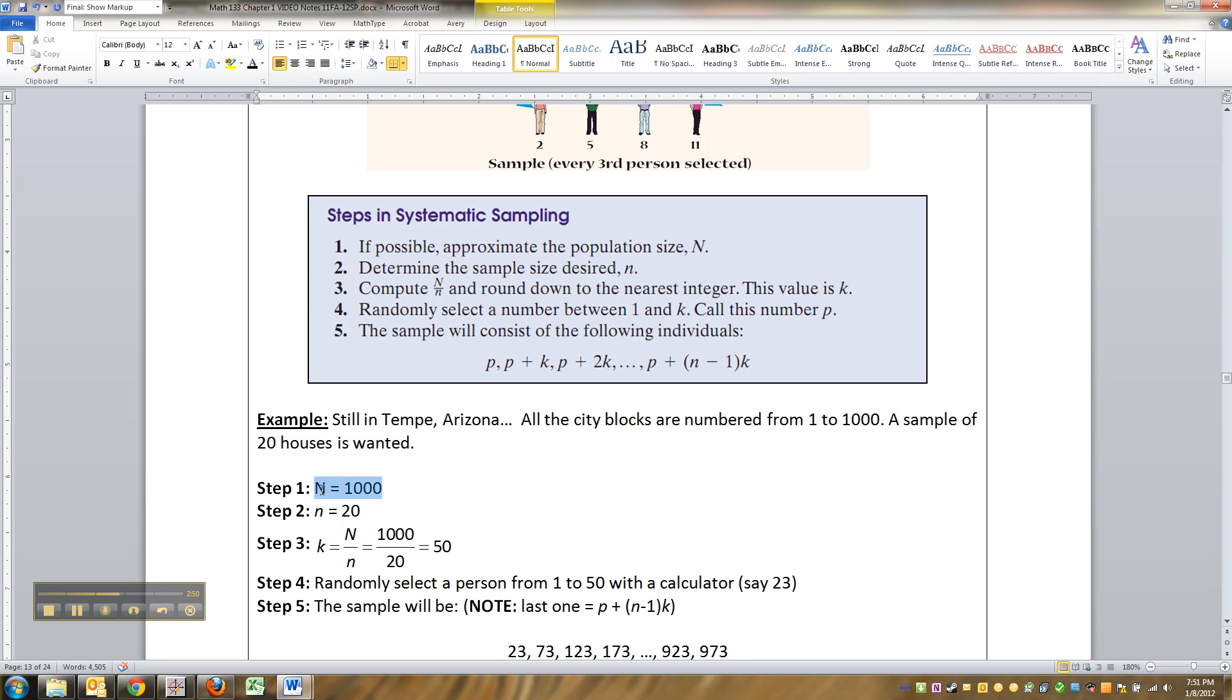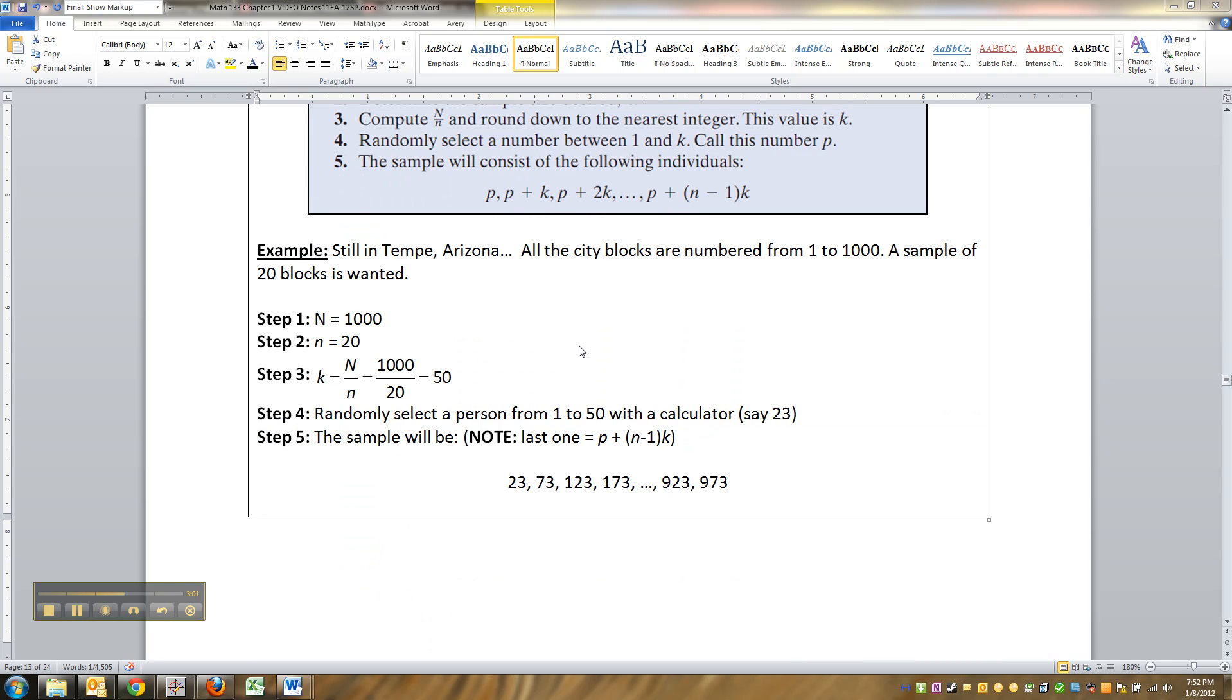It doesn't really matter how you number them, but you just number them and you want twenty houses. So you've got a thousand blocks to look at. You want to get twenty. Anyway, so you take the thousand, you divide it by the twenty, and that gives you fifty.